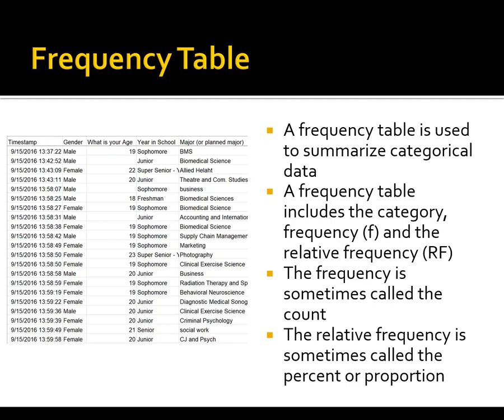I'm going to focus on year in school for the analysis so we understand frequency tables, bar graphs, and pie charts. A frequency table is used to summarize categorical data, and it consists of three things: the category, the frequency, and the relative frequency. The frequency is sometimes called the count, and the relative frequency can be called the percent or the proportion — terms that depend on the textbook or software you're using.